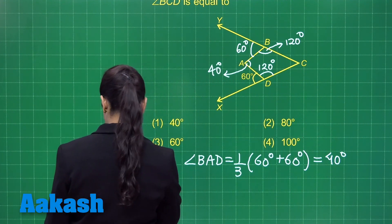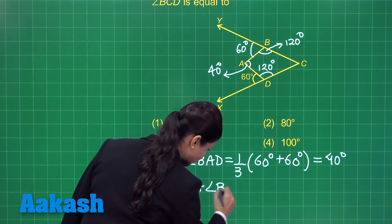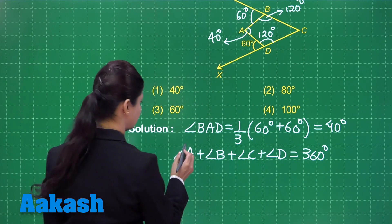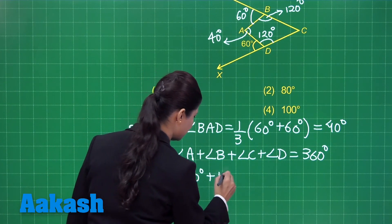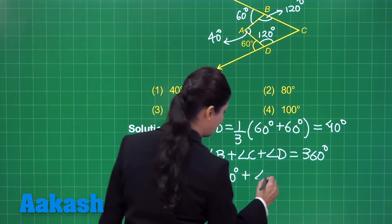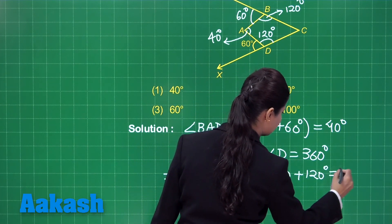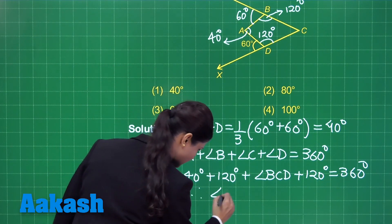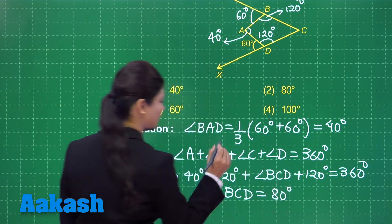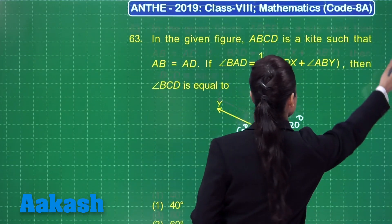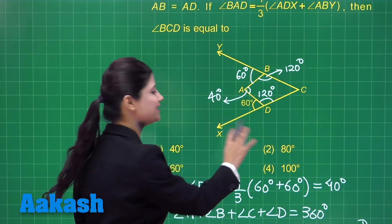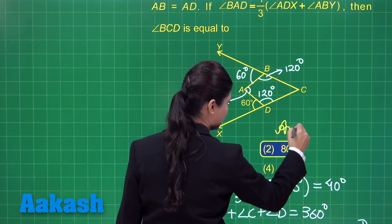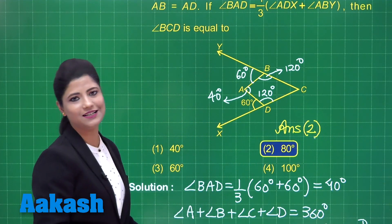Using the angle sum property of a quadrilateral: angle A plus angle B plus angle C plus angle D equals 360 degrees. Angle A is 40 degrees, angle B is 120 degrees, and angle D is 120 degrees. Subtracting 280 from 360, angle BCD measures 80 degrees. Out of the four options — 40, 80, 60, and 100 degrees — the correct answer is option 2, that is 80 degrees.